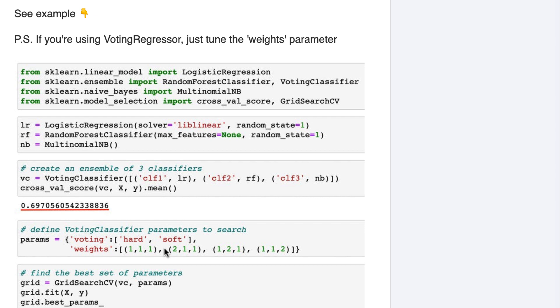For example, we can give the logistic regression model double the voting power of the other models by setting the weights to 2, 1, 1. We put the various options for voting and weights in the params dictionary, and then we pass the voting classifier object and the params to GridSearchCV.